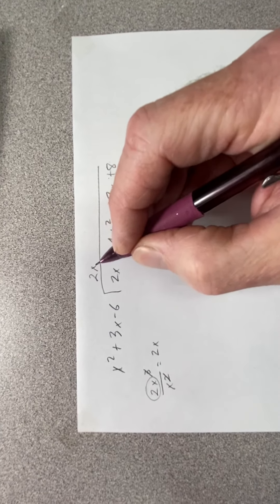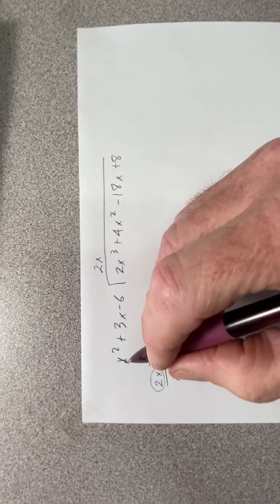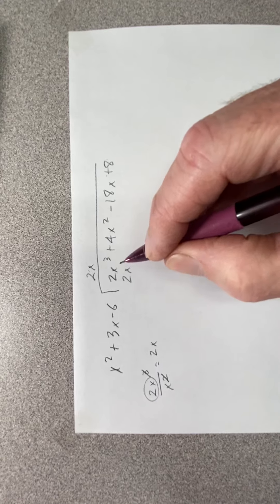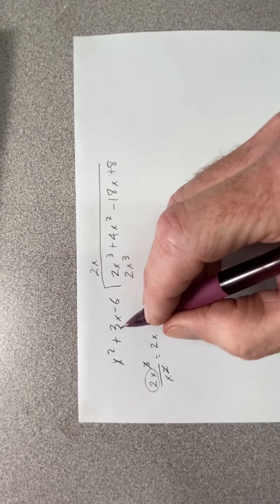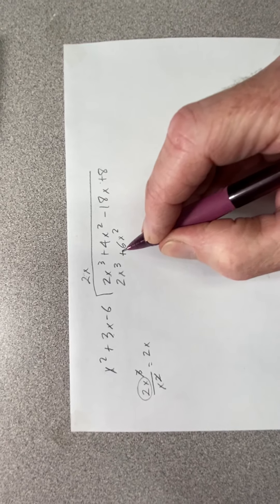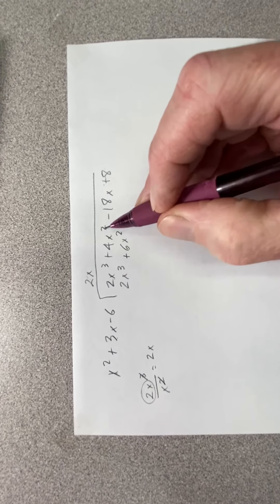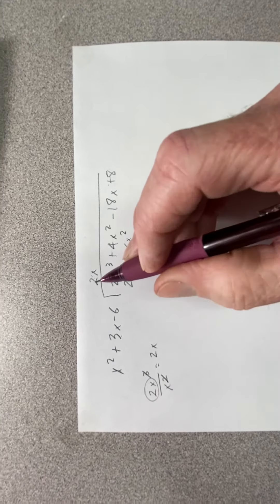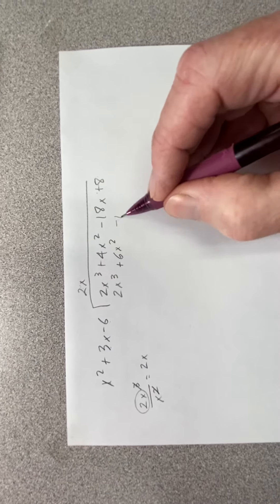So I have 2x going on top. Multiply 2x times x squared - that's 2x cubed. 2x times 3x is 6x squared, it's positive. Notice I've got my squared term in my squared column. And 2x times negative 6 is negative 12x.